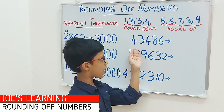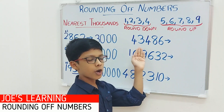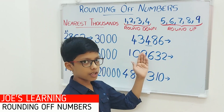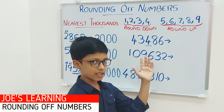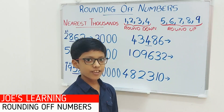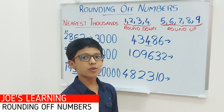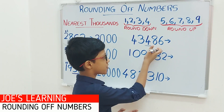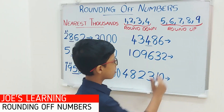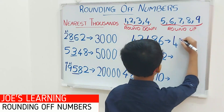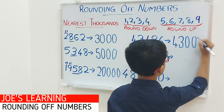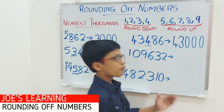Now let's move on to this example, that is 43,486. Again we have to look at the digit in the hundreds space — 4 is in the hundreds space. We compare it with 5: 4 is lesser than 5. So we have to put a 0 in the ones, tens and hundreds space and leave the remaining digits as it is. So 43,486 rounded off to the nearest thousand equals 43,000.